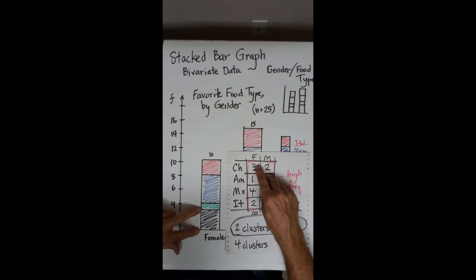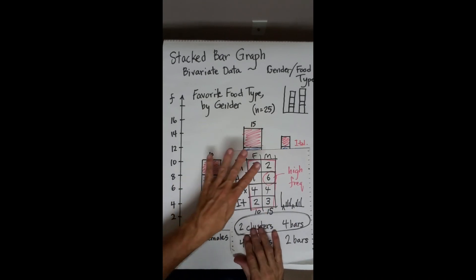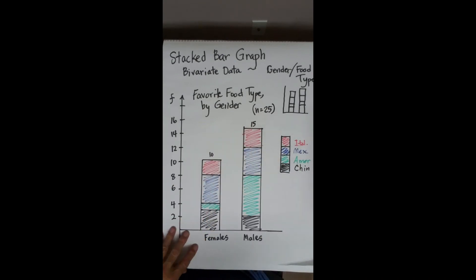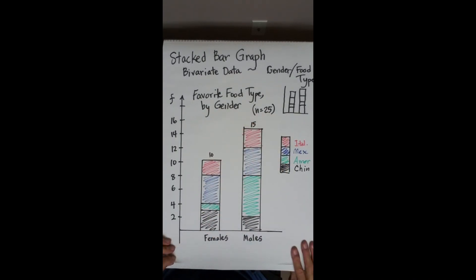Chinese should be three, American is one so it has to be smaller, Mexican is four so it's got to be bigger and then so on. It's a couple things to look for but be careful making this. Use a pencil, get it right and then darken it in with pen or marker. This is your stacked bar graph.